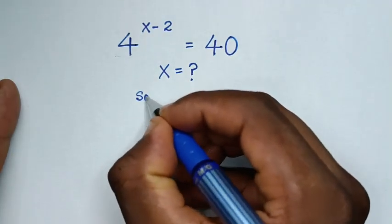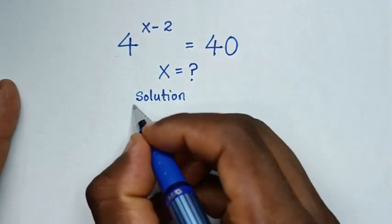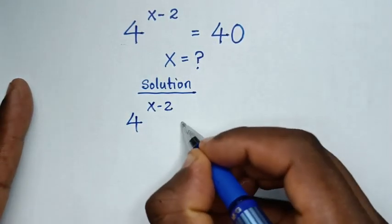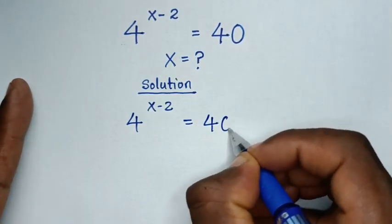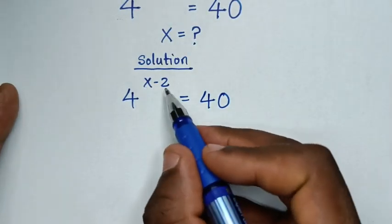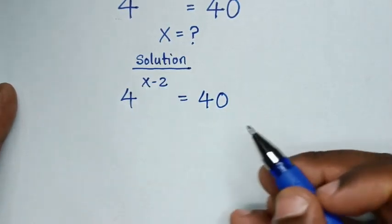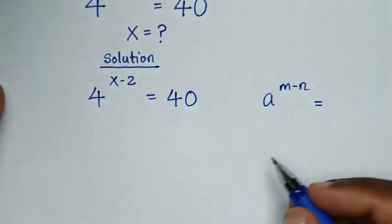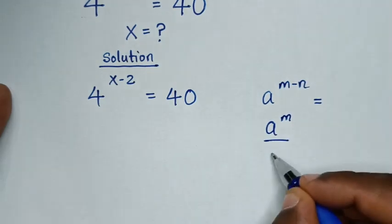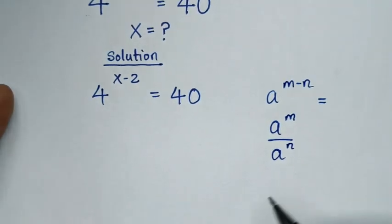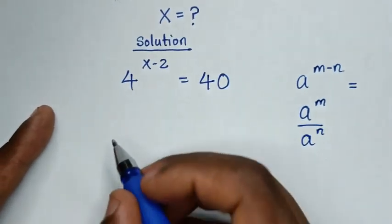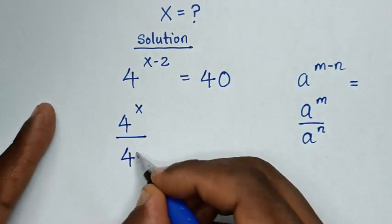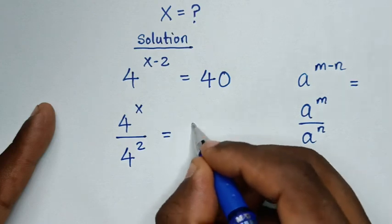Now, solution. From our problem, 4 power of x minus 2 is equal to 40. In the first step, 4 power of x minus 2 is in the form of a power of m minus n, which equals a power of m over a power of n. So 4 power of x minus 2 is the same as 4 power of x over 4 power of 2, and that is equal to 40.